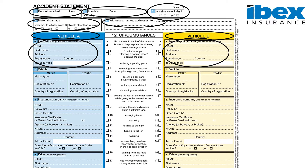In section 7 we will enter the vehicle details, which include the make, model, and registration number only.